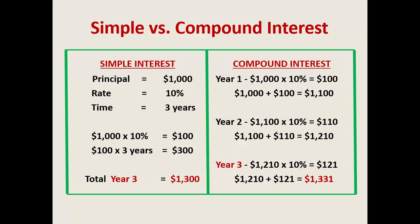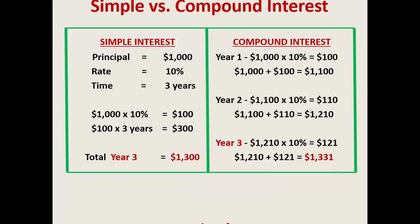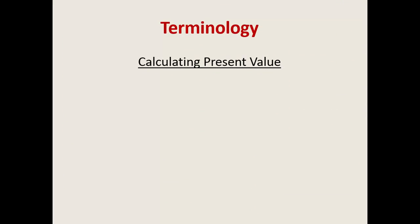Simple interest is only earning on the original principal, where compound interest — think of interest earning interest — so you can earn much more money. And that's what time value of money is all about.